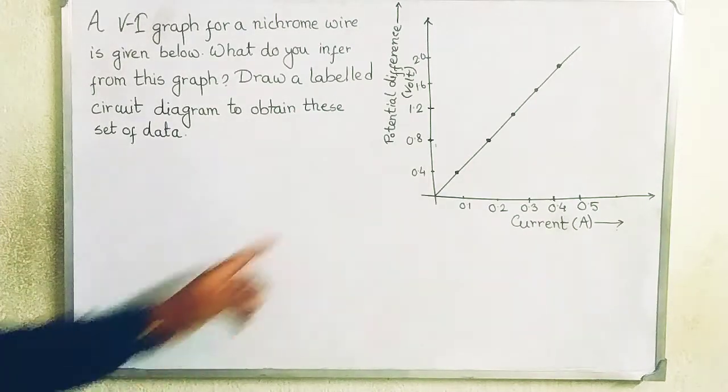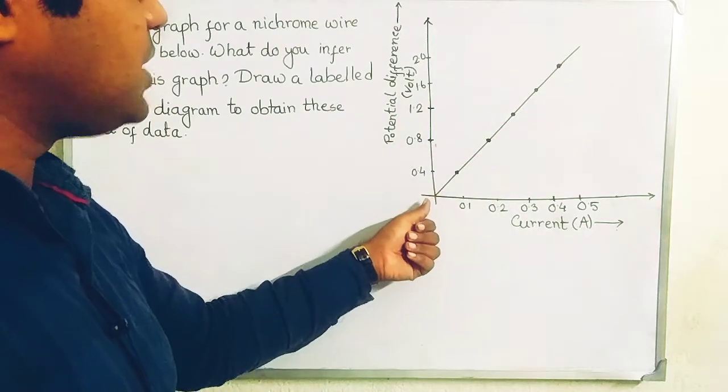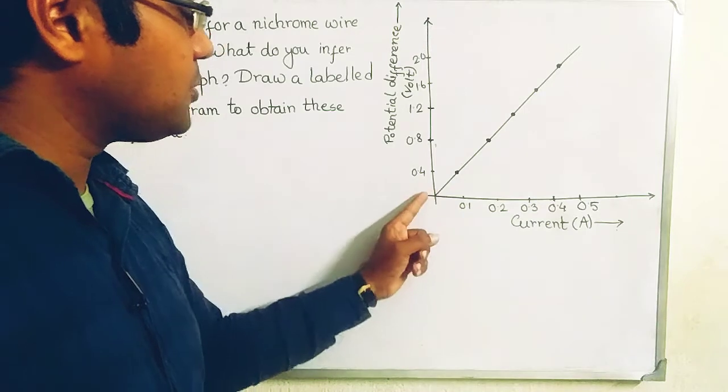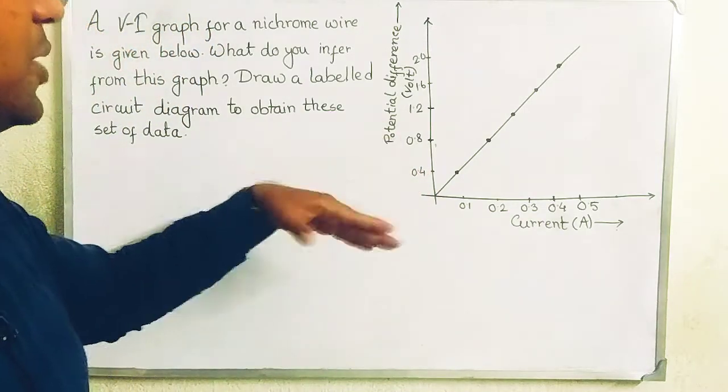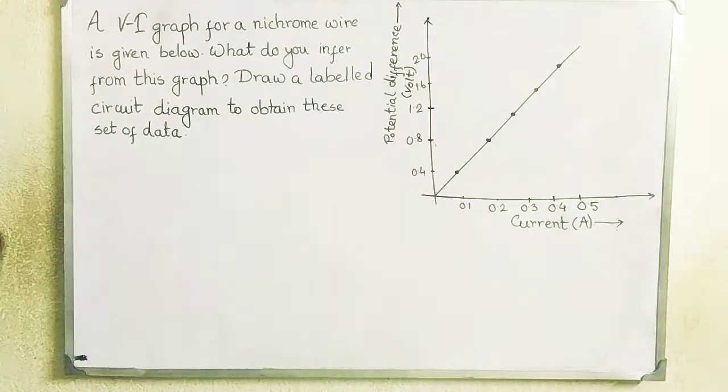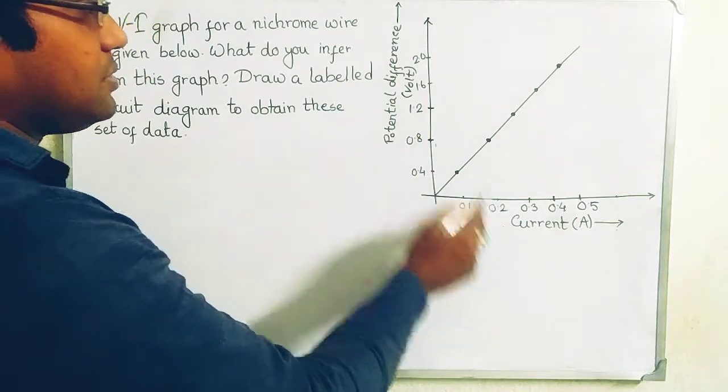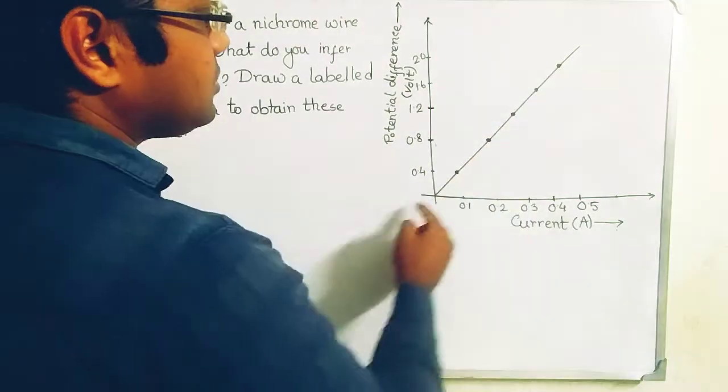Draw a labeled circuit diagram to obtain this set of data. Here the nature of the V versus I curve is a straight line passing through the origin 0,0. As the current increases, the voltage increases proportionately. Since the voltage versus current curve is a straight line passing through the origin, it gives you the resistance.